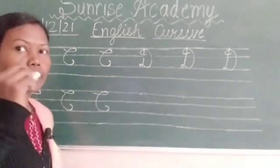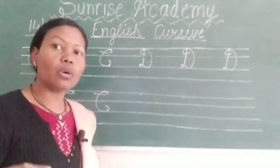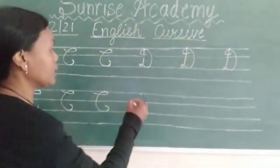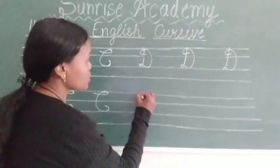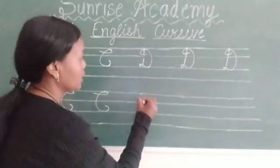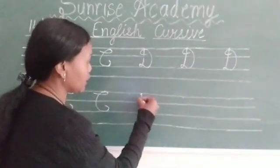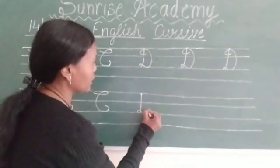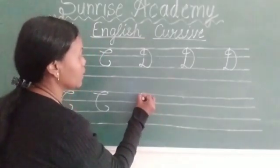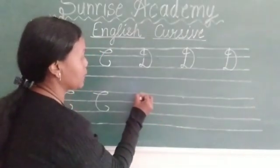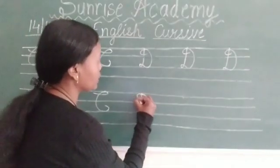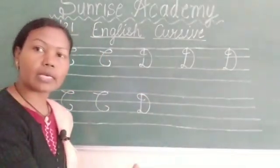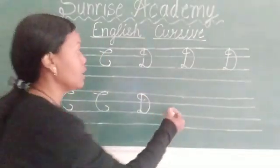और मैंने बोला है कि pencil को उठाना नहीं होता है. Now letter D — first to third. यानि first line से start करेंगे और third line पर जाएंगे, फिर turn करेंगे और फिर again go up, यानि first line में जाएंगे और turn करेंगे अंदर की sign. ये हमारा हो गया letter D.